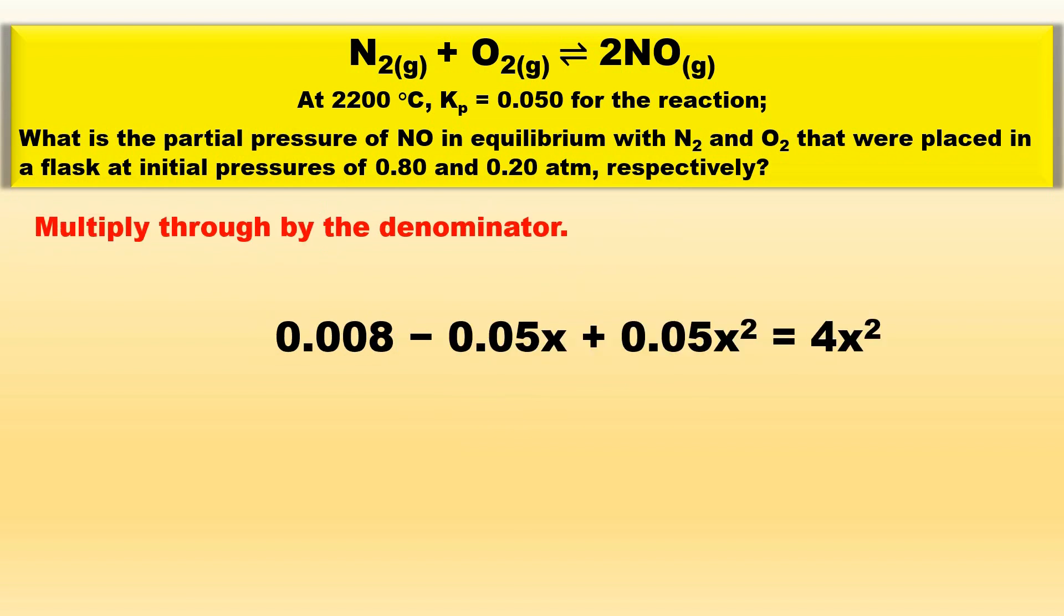Multiplying through by the denominator yields the following relationship: 0.008 minus 0.05x plus 0.05x squared is equal to 4x squared.